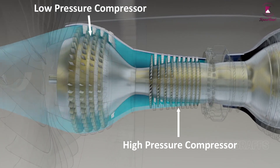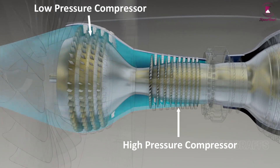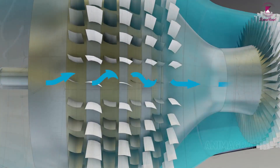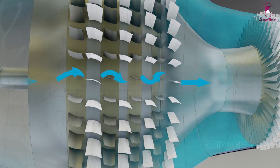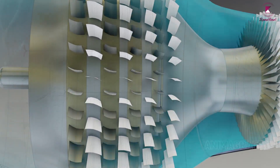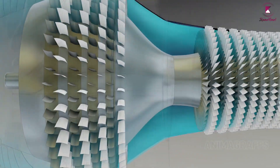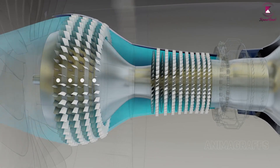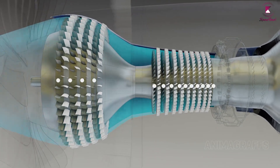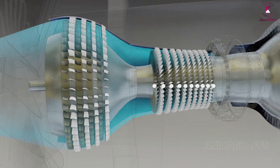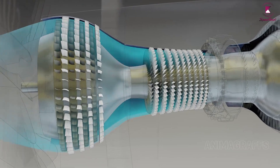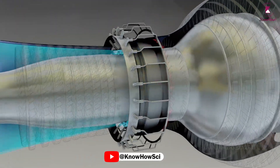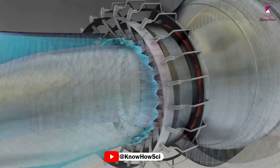When the low-compressed air comes into the high-pressure compressor, it further compresses the air up to very high pressure and also greatly increases its temperature. The high-pressure compressor makes the air temperature so high that when it touches the fuel in the combustion chamber, the combustion process starts itself.